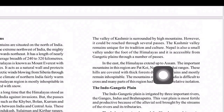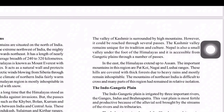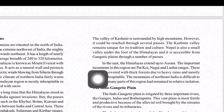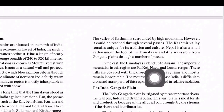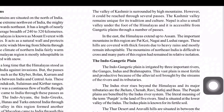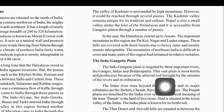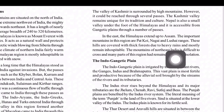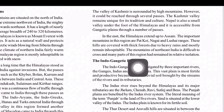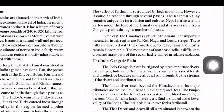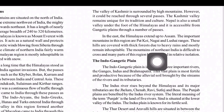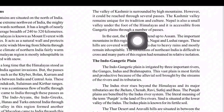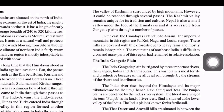In the east side, the Himalayas extend up to Assam. The important mountains in this region are the Patkai, Naga, and Lushai ranges. These hills are covered with thick forest due to heavy rains and mostly remain inhospitable. The mountains of Northeast India are difficult to cross, and many parts of this region have remained in relative isolation, though there is now a little more accessibility.